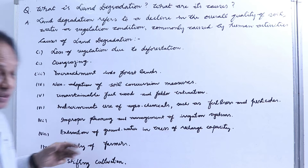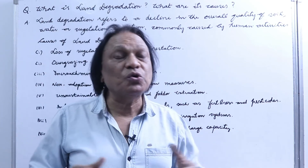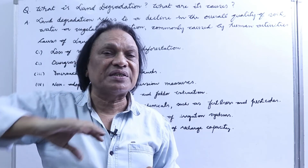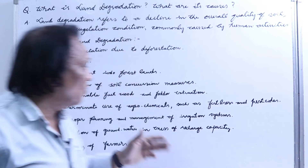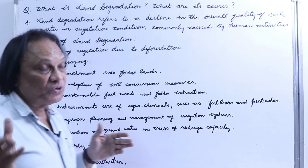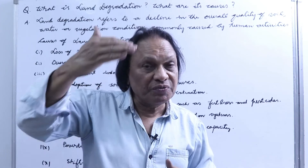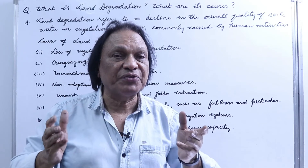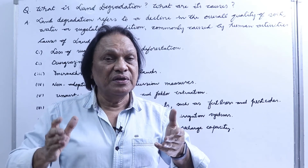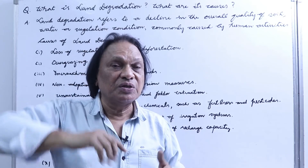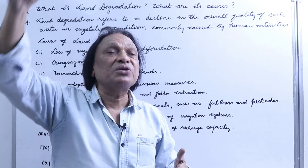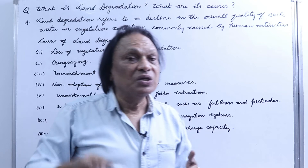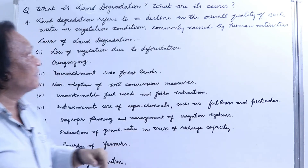Indiscriminate use of agrochemicals is a very important point. To grow more and more crops, man has started using pesticides and insecticides — these are called agrochemicals. Of course, for a short period your production and output will go up. Because of selfish gains, people are using more and more fertilizers and pesticides. So temporarily, in the short term, production goes up. But in the long term, you are destroying and degrading the land — that is land degradation.